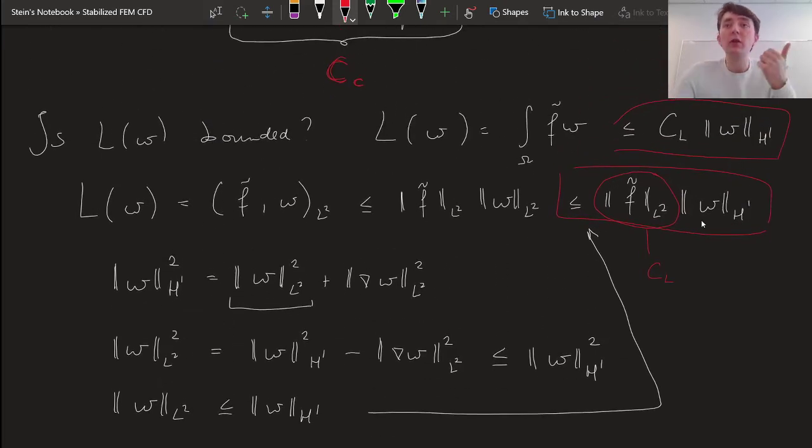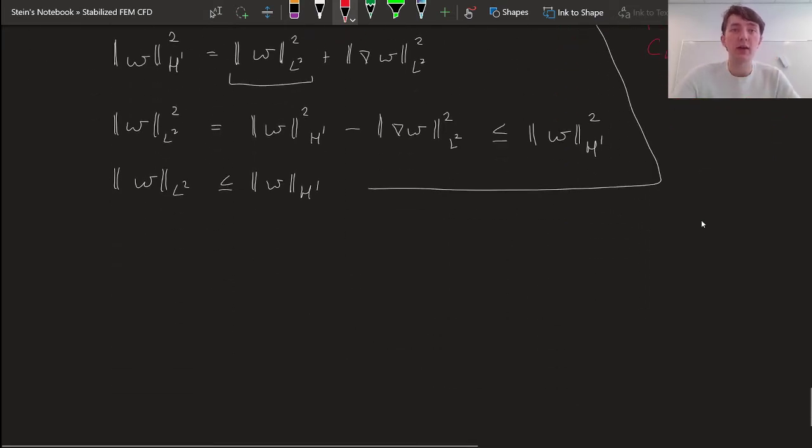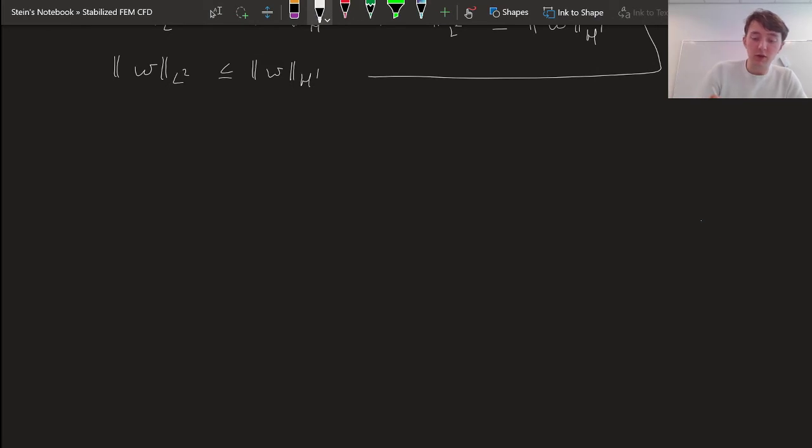So now we have boundedness of our linear form, our right-hand side, and coarsivity of our bilinear form, our left-hand side. And those were the two things that we needed to talk about the stability of the partial differential equation.